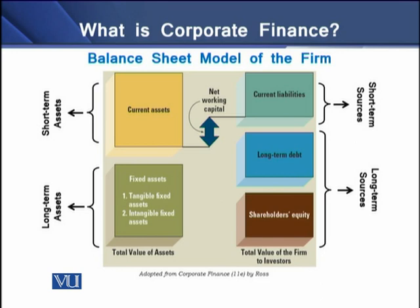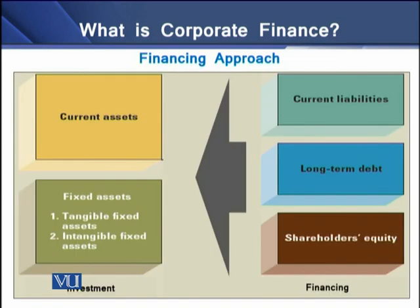If we classify these liabilities by timing, we can say that long-term debt and shareholders' equity are the long-term sources, and current liabilities are the short-term sources. From these two types of sources, the firm develops short-term assets and long-term assets accordingly. If we talk about the financing approach of the firm, both short-term and long-term sources are used as financing means for the acquisition of short-term and long-term assets. So the financing becomes equal to the investment.